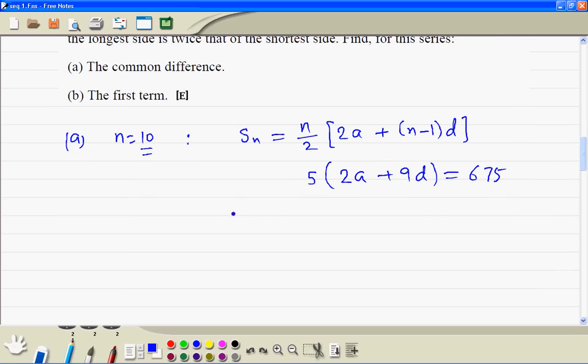If we divide both sides by 5, we get 2a plus 9d is equal to 135.